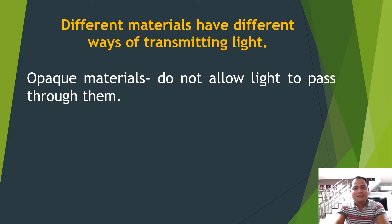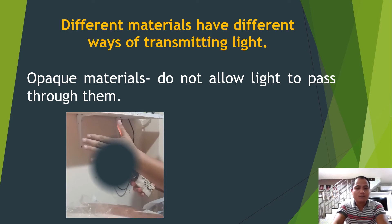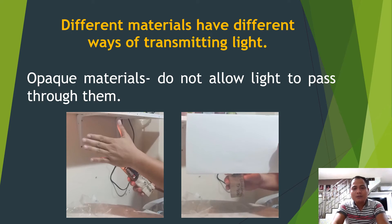When we say opaque materials, they do not allow light to pass through them. For example, our hand can block light, so our hand is opaque. Also, a module can block light. Why are materials opaque? Take our walls — walls are opaque materials and do not allow light to pass through because we need privacy in our house.